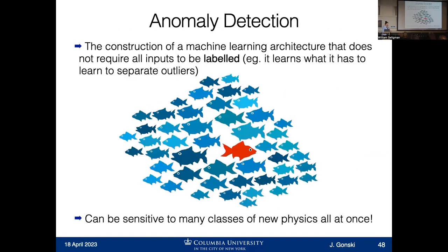I want to very briefly touch on one particular area of machine learning we've been working on here at Columbia: using machine learning to perform anomaly detection. The idea is that we're building a machine learning architecture that doesn't require labels to train. You don't have to tell your algorithm okay, this event is new physics, this event is background — you just feed it a bunch of data and it learns what it has to learn from that data set to classify outliers, to remove new events from a distribution that look unusual. This is incredibly efficient for looking for anything that isn't the standard model, because we can be sensitive to many classes of new physics all at once.